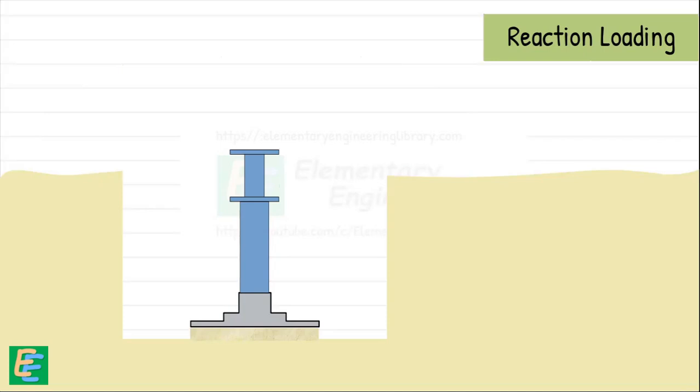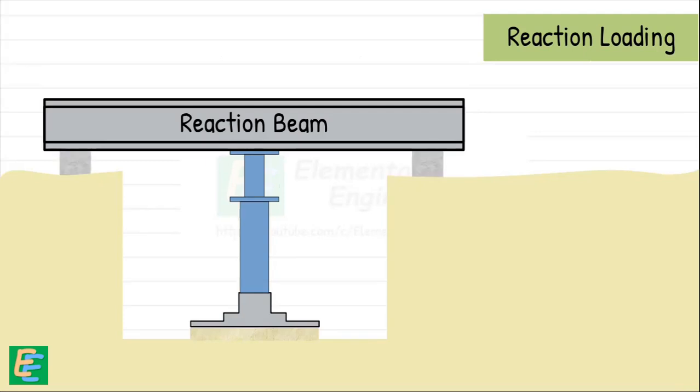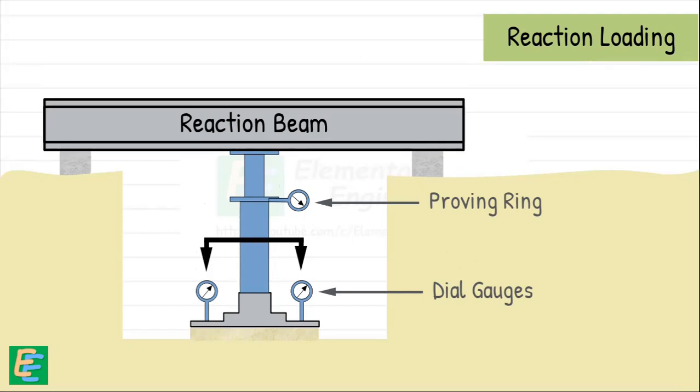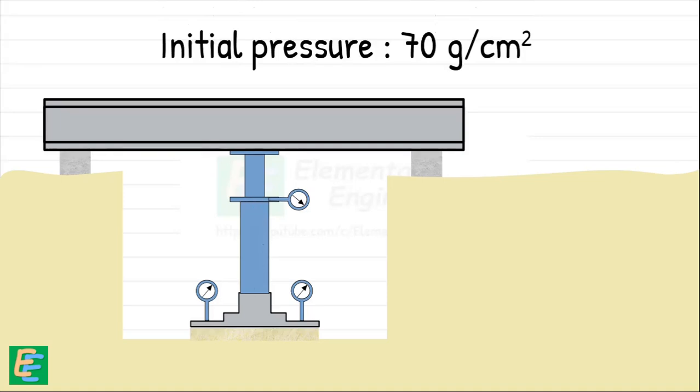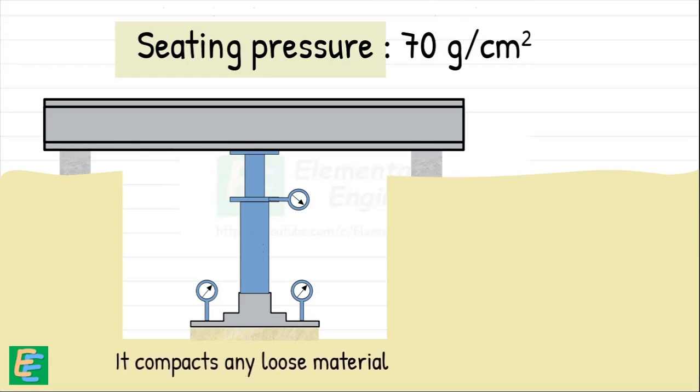In reaction loading, we use a hydraulic jack to push down on the plate. But for this to work, the jack needs something to push against, like a strong reaction beam or truss. A proving ring is used to measure how much force is being applied. We also fix a minimum of two dial gauges on the plate to measure how much the soil settles under the applied load. These gauges are fixed at diametrically opposite ends of the plate so we can detect any tilting or uneven settlement. Before starting the test, we apply an initial pressure of 70 grams per centimeter square to the plate. This is called the seating pressure. It ensures that the plate is fully in contact with the soil and compacts any loose material directly beneath it.